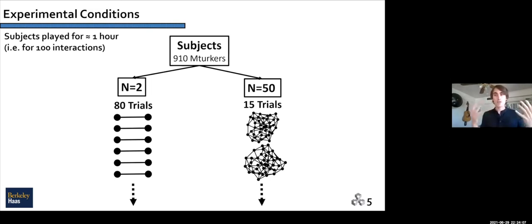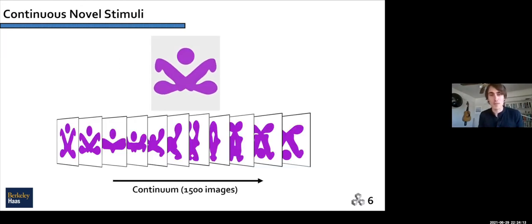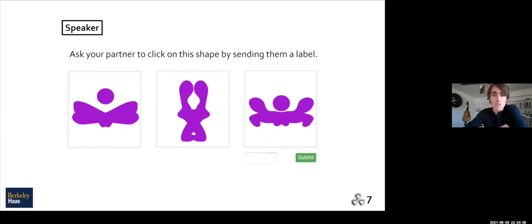And they played in this category formation game for over an hour. So the way that we created novel stimuli for them to categorize was basically by starting with a Rorschach blot, and then through rotation, we could create arbitrarily many sequence of these shapes. And so we settled on a continuum of 1,500 images, and this is what the social groups were tasked with categorizing, basically inventing their own labeling system for making sense of this novel domain. And so this is what the coordination paradigm looked like. It was an interactive crowdsourcing framework. So it was a series of pairwise interactions.